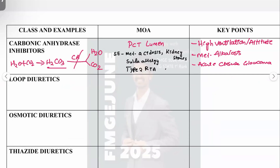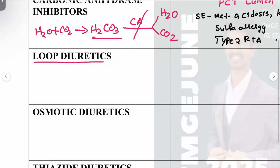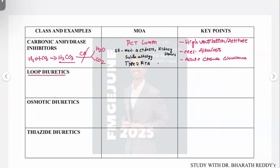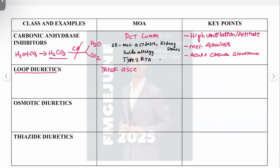Moving on to loop diuretics — the mechanism of action occurs at the thick ascending limb, where we block the sodium-potassium-chloride cotransporter (Na⁺/K⁺/2Cl⁻).